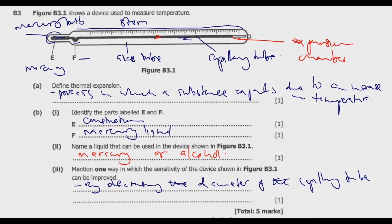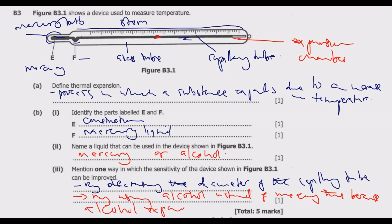The second option is to use alcohol instead of mercury. This is because alcohol expands more than mercury for the same temperature rise — alcohol has a lower boiling point, so for the same temperature it expands more than mercury. This is how you answer question B3 to get these five marks.